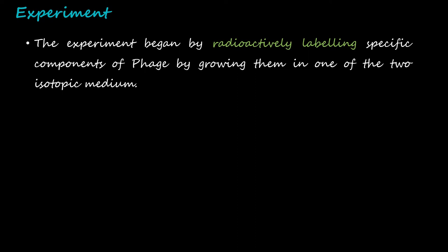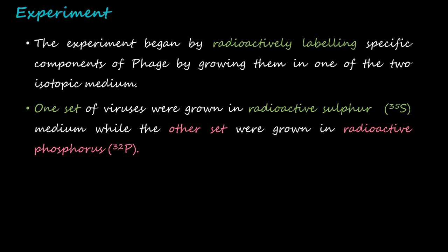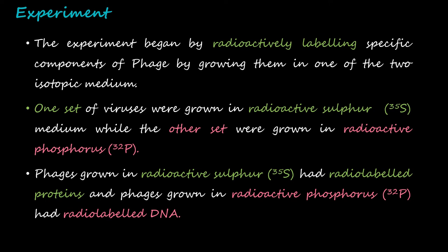The experiment began by radioactively labeling specific components of phage by growing them in one of two isotopic media. One set of viruses were grown in radioactive sulfur-35S medium, while the other set were grown in radioactive phosphorus-32P. Phages grown in radioactive sulfur had radiolabeled proteins, and phages grown in radioactive phosphorus had radiolabeled DNA.